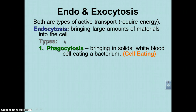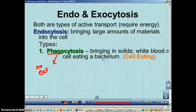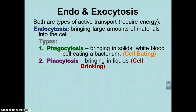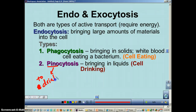Endocytosis comes in two flavors. The first is called phagocytosis — the prefix 'phago' means to eat, so if you translate the word it means 'cell eating.' This is the process of bringing solids into the cell. For example, when a white blood cell eats a bacterium, that is phagocytosis. The other type of endocytosis is called pinocytosis — 'pino' refers to drink, like the wine pinot noir. So this is 'cell drinking,' bringing in liquids or oils.